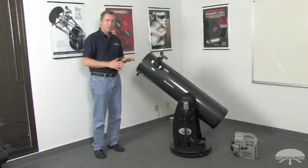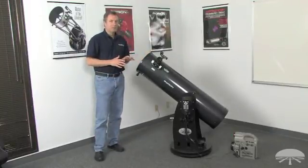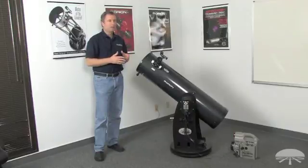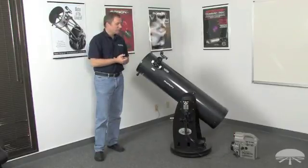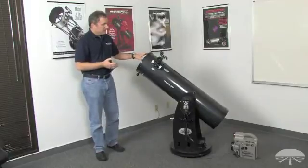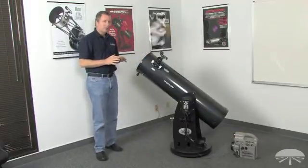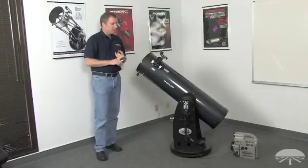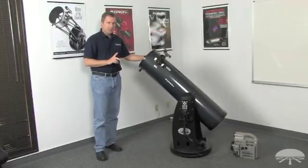The more glamorous mode of operation is go-to mode. Fully automated pointing of the telescope to any object you want to see. The alignment procedure for that is also very simple. It's a two-star alignment procedure. Basically, you aim the telescope at a first alignment star.